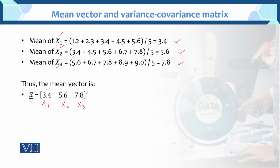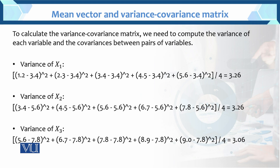Now if we find the variance and covariance, this is the topic of the mean vector and the variance-covariance matrix. Mean vector we have found numerically. Then for the variance-covariance matrix, we need to compute the variance of each variable and the covariance between pairs of variables — covariance between x1 and x2, and so on.